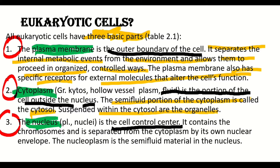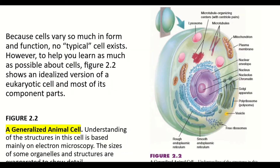The nucleus is the cell control center. It contains chromosomes and is separated from the cytoplasm by its own nuclear envelope. The nucleoplasm is the semi-fluid material in the nucleus. Because cells vary so much in form and function, no typical cell exists. However, figure 2.2 shows an idealized version of a eukaryotic cell and most of its component parts — a generalized animal cell as seen under an electron microscope.